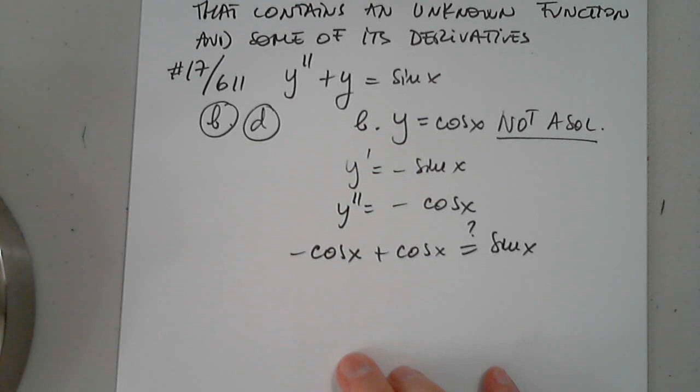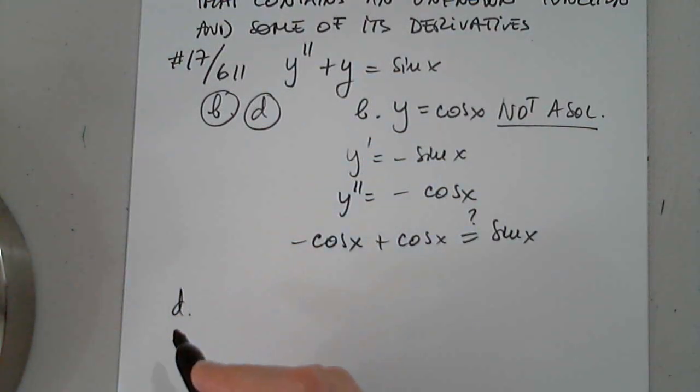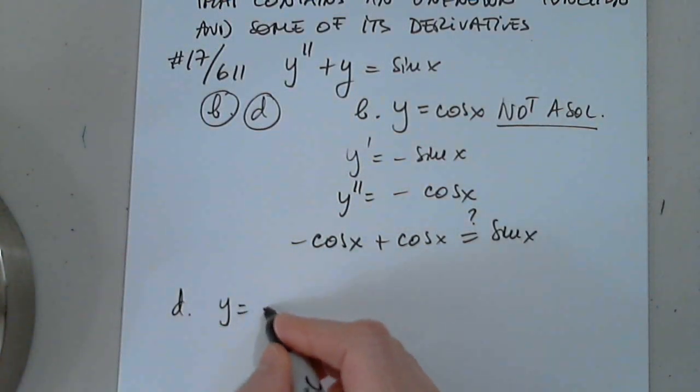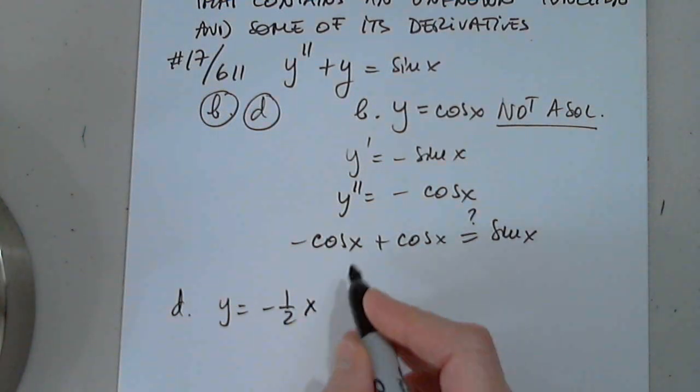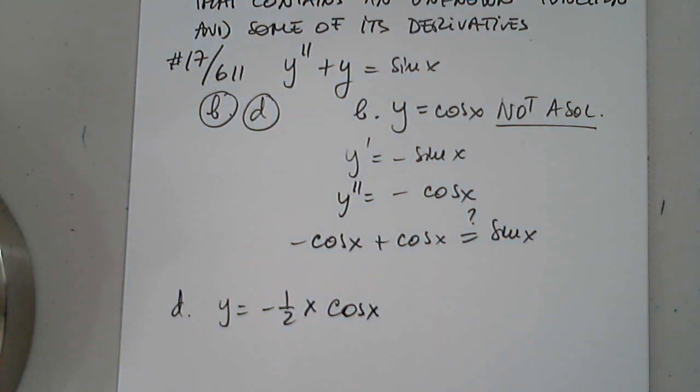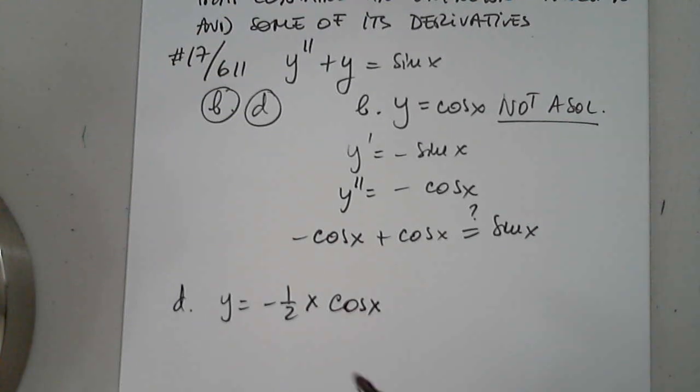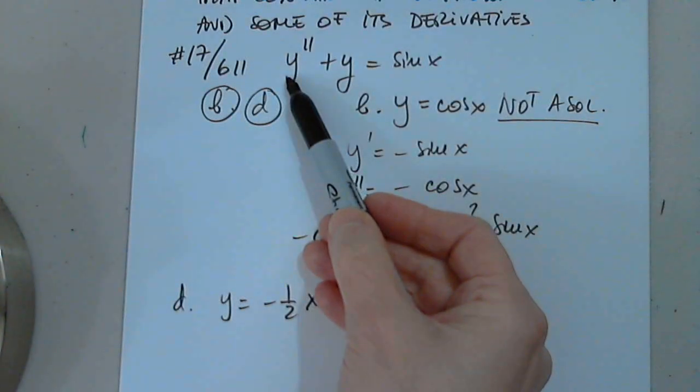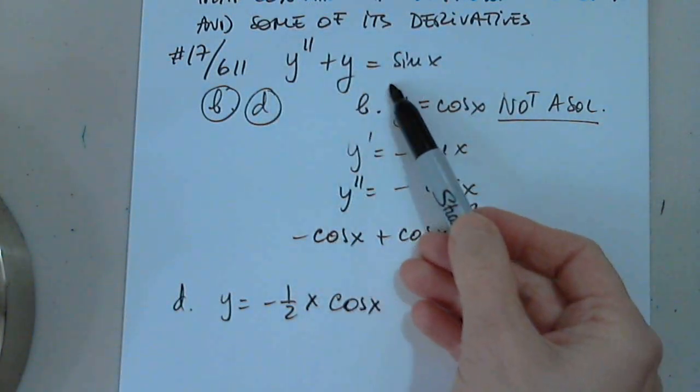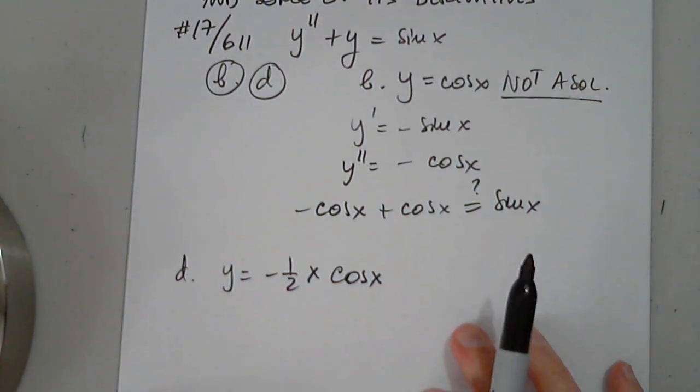Let's check option D. In option D, they're giving us y equals negative one half x times cosine x. And the same question, is this function a solution of the given differential equation? I don't know. I have to find a second derivative.